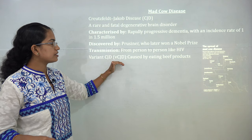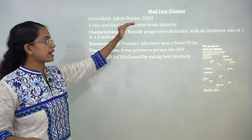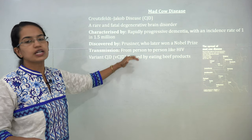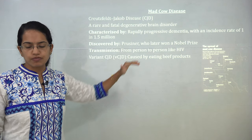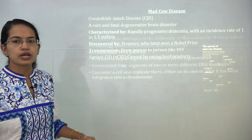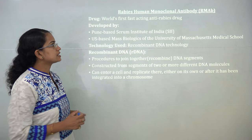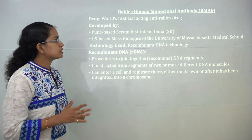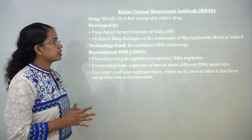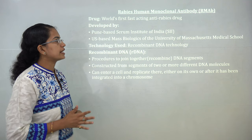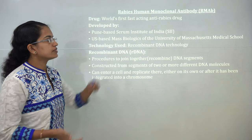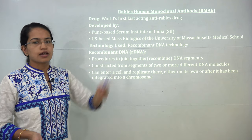A variant of CJD has been discovered and found in people who consume beef. The next topic is the rabies human monoclonal antibody, known as RMAP.